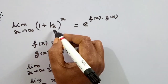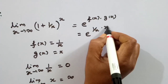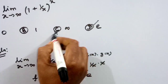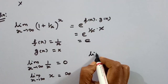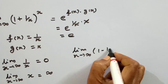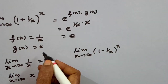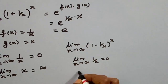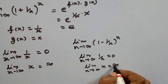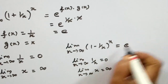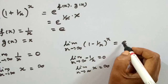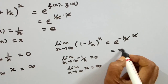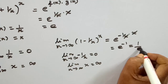We substitute: this is 1 by x times x, giving e to the power of 1 by x into x, and x cancels, leaving e to the power 1. But noting the correction — f of x is minus 1 by x, so x cancels giving e to the power minus 1, which equals 1 by e. The correct answer among the options is e.